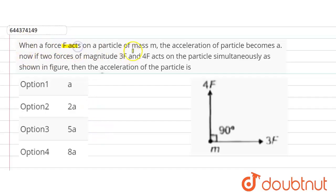When a force F acts on a particle of mass m, the acceleration of particle becomes a. Now if forces of magnitude 3F and 4F acts on the particle simultaneously as shown in the figure, then acceleration of the particle...